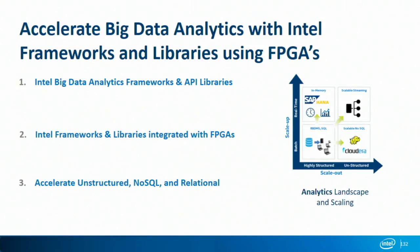It all really starts with the investment that Intel has made in big data analytics frameworks. These are frameworks built on open standard building blocks, as well as the API libraries that exist that we've optimized for Xeon processors. Within this framework and within this set of APIs, we've now integrated FPGAs, a technology that really is emerging and becoming widespread in servers. Because we've integrated it within the existing frameworks and implemented some of the key functions in these libraries, your applications don't need to change.